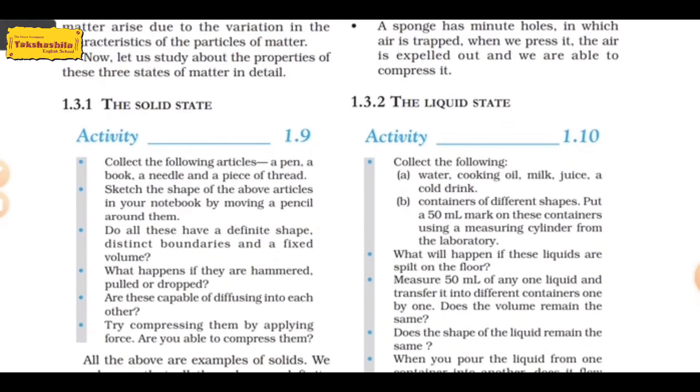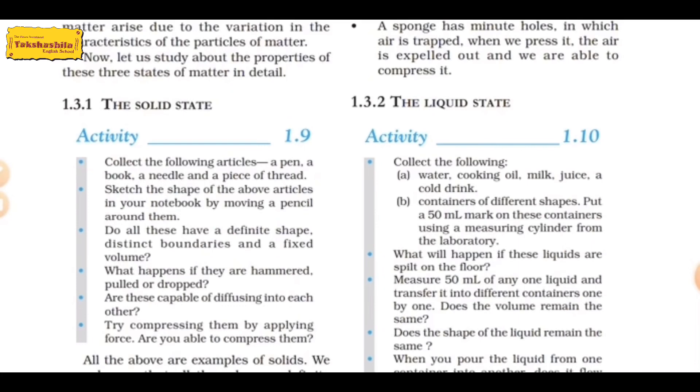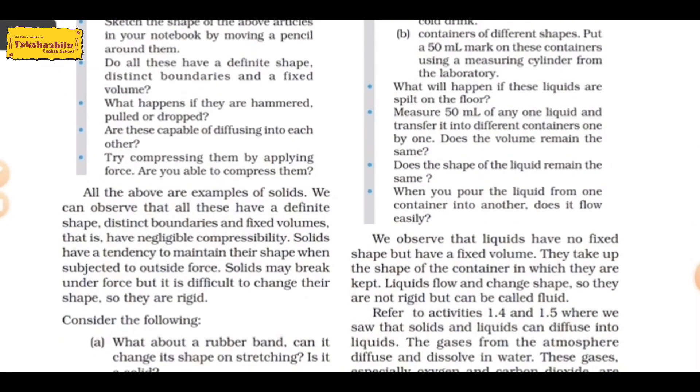First of all, solid state. What are the properties of solid state? Here is Activity 1.9: collect the following articles - a pen, a book, a needle, a piece of thread, or anything whatever you see around you. Collect them and observe them. Draw their boundaries in your notebook and observe their shape, boundaries, and fixed volume.